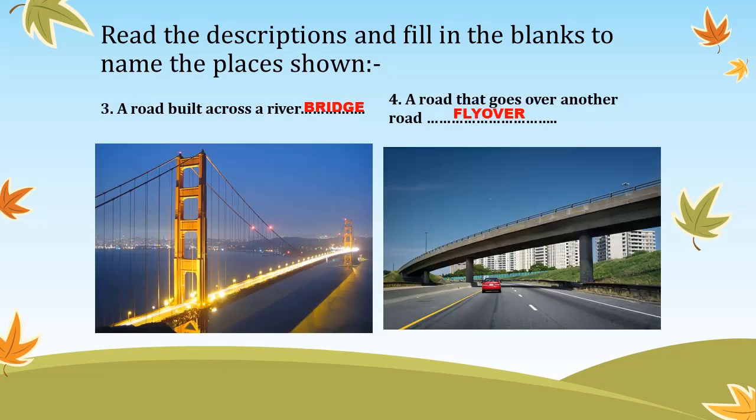The third description is a road built across a river. The road that is built above the river is called a bridge.